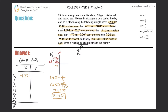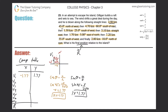Now for the y-component of V1: I know the hypotenuse, I know the angle, and I'm looking for the opposite side, so I'll use sine. Sine of 45° equals y over 2.5, so y equals sine of 45° times 2.5, which comes out to 1.77 — the same as cosine of 45° since sin 45° = cos 45°. That's positive, so enter 1.77 in the y-column. V1 is done.